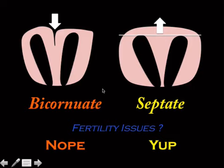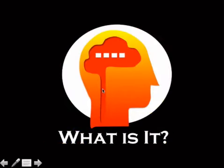It's important to distinguish these two because if you call a bicornuate uterus a septate and they go and resect the 'septum' — which isn't a real septum — it can make things worse. And you'll be getting a letter from a lawyer. Look at the fundal contour. On the test, look at the fundal contour.